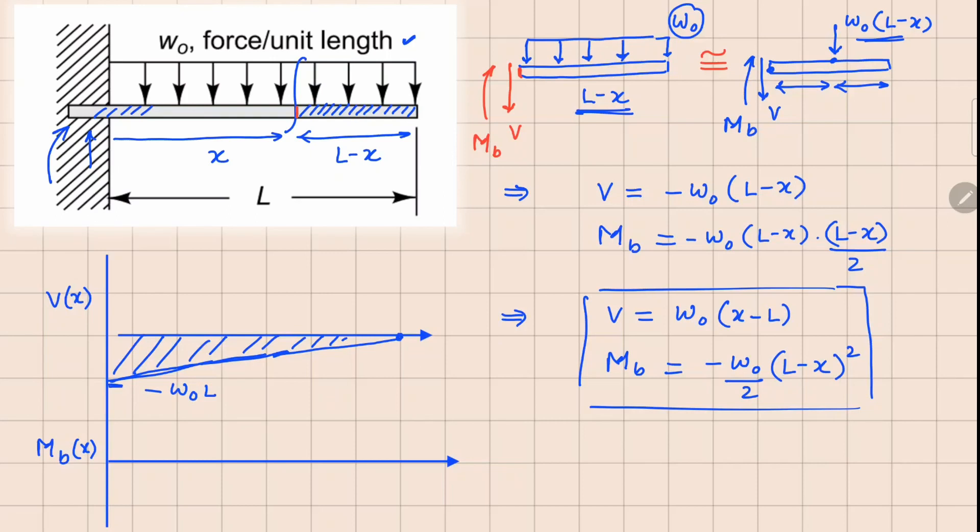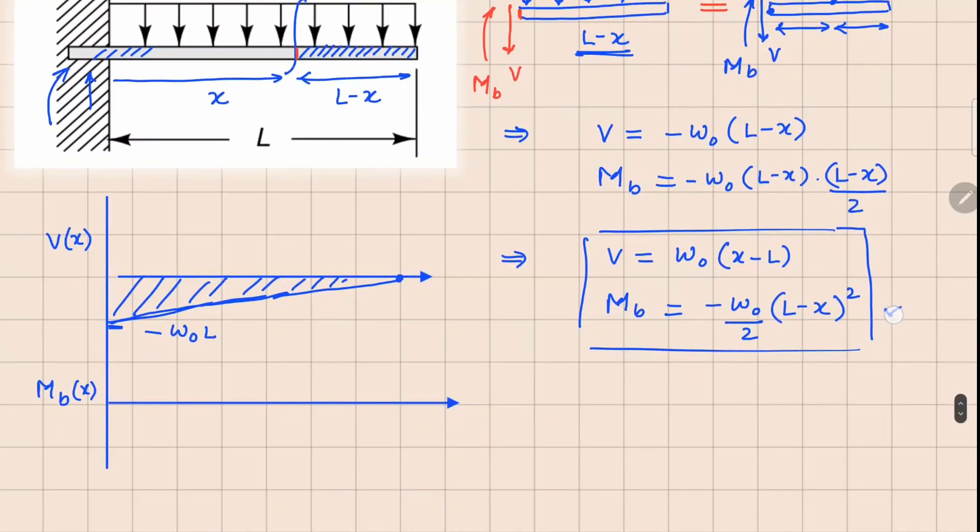For the bending moment we can plot this parabola. Now for this we can have two values and one peak. Peak is where the slope for this curve is going to be zero. So value of this at x equals zero is minus w_0*L² divided by 2, and at x equals L this is going to be zero. So this is happening at x equals zero and this is at x equals L.